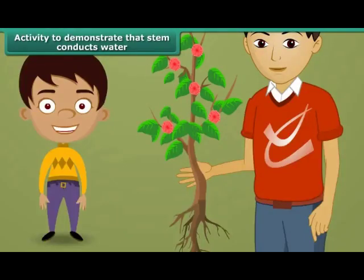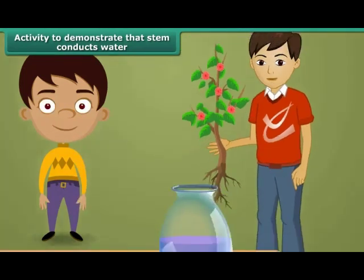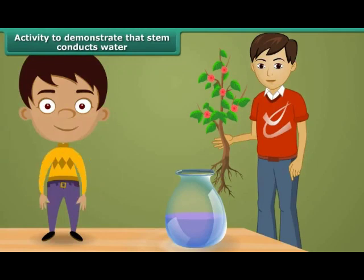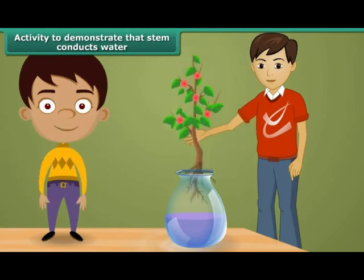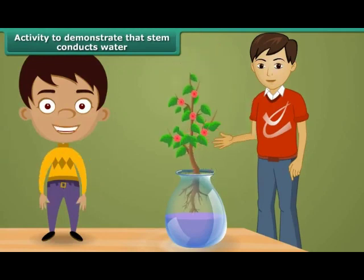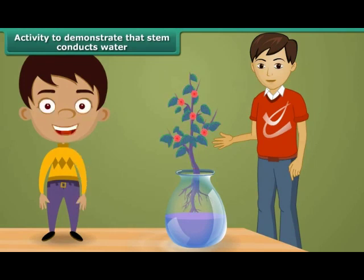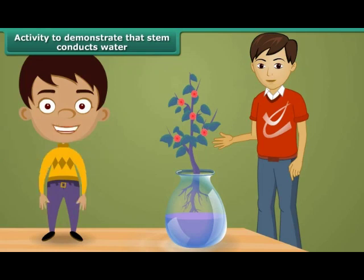Let us perform an activity to demonstrate that the stem conducts water. Take a balsam plant with roots and put it in a pot containing colored liquid. After a while, you will observe the same color in the stem, leaves, etc. of the plant. This proves that the stem conducts water from the roots to the other parts of the plant body.